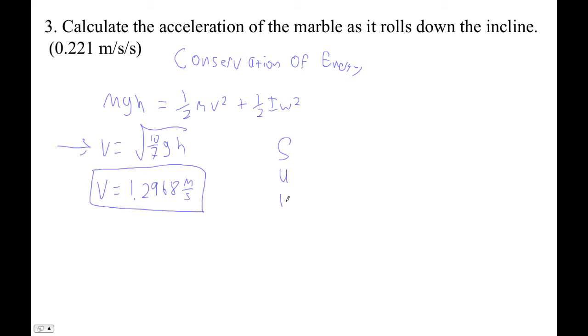Started from rest, went down the plane. If you recall, the plane was 3.8 meters long. Final velocity is what we'd like to know. Oh no, we know the final velocity, sorry. It's 1.2968. And we want the acceleration, so we use no t.